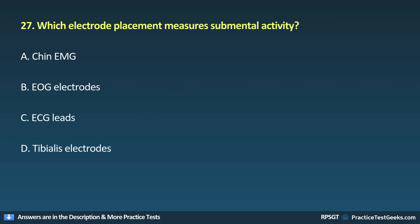Question 27: Which electrode placement measures submental activity? A. Chin EMG, B. EOG electrodes, C. ECG leads, D. Tibialis electrodes.